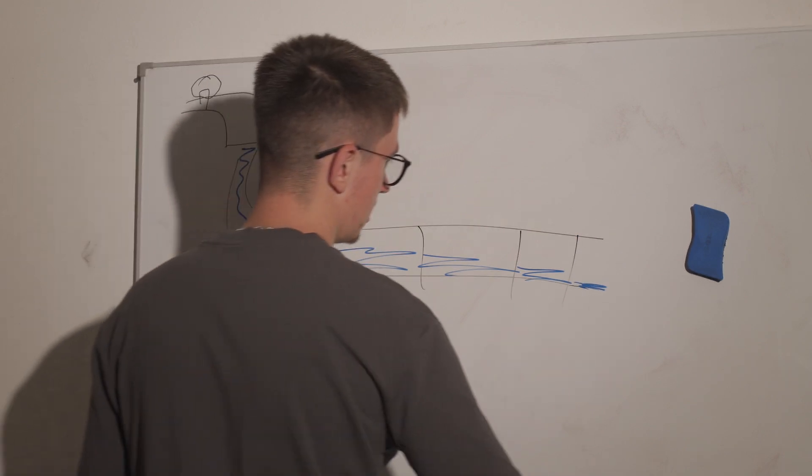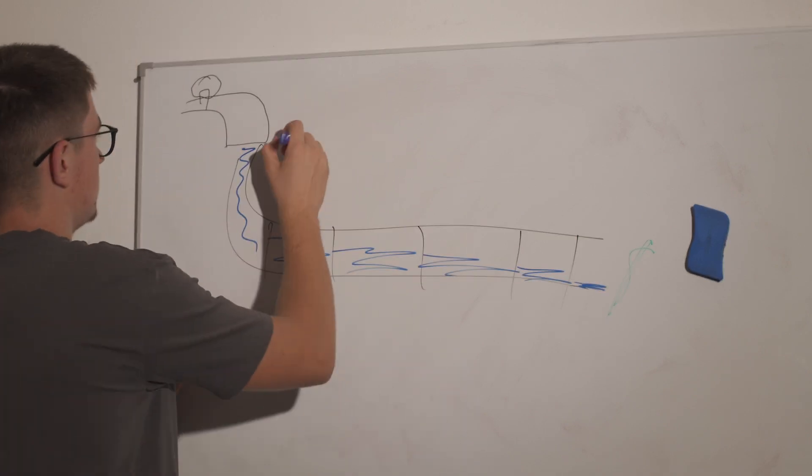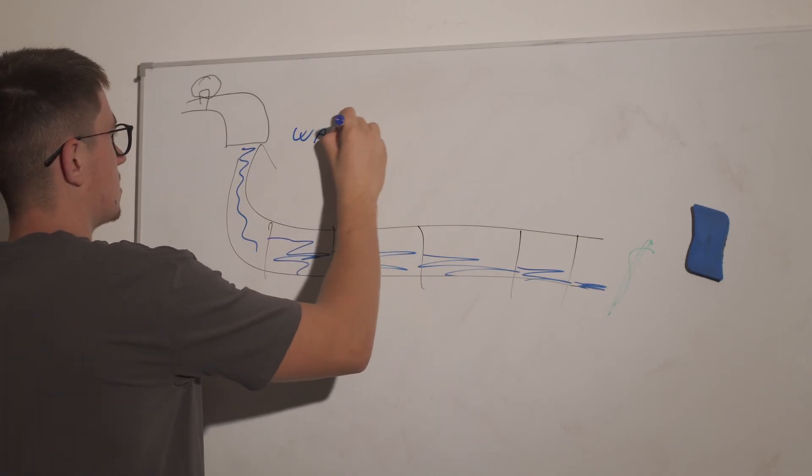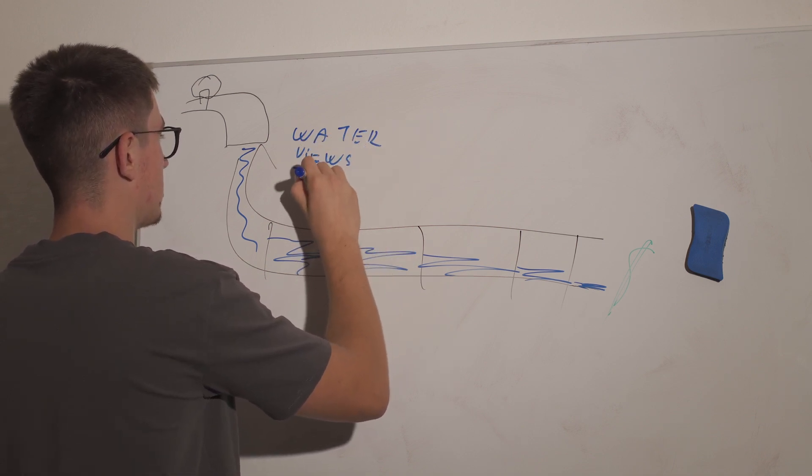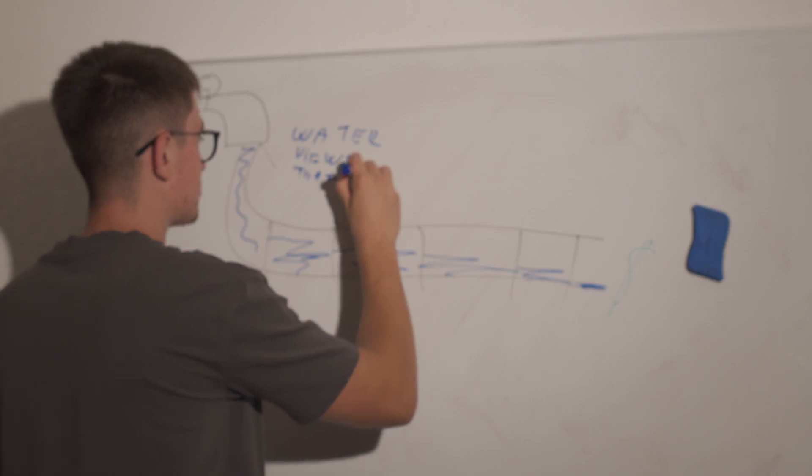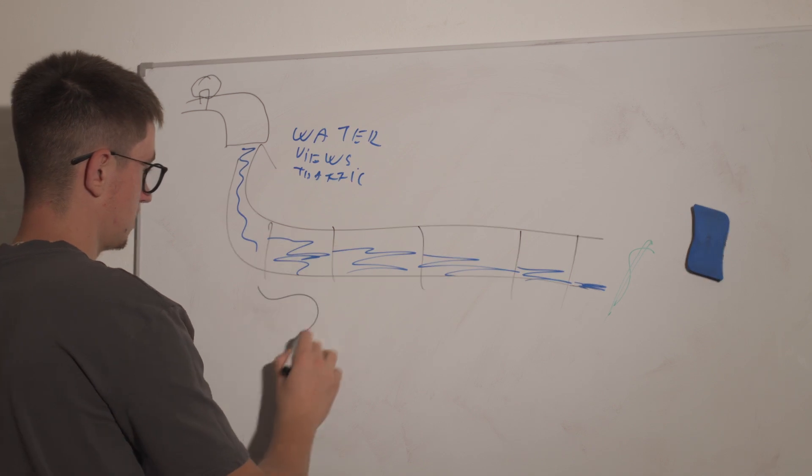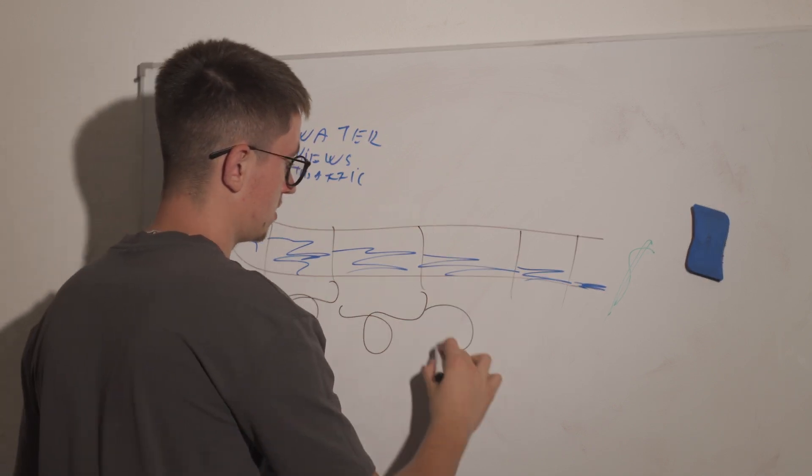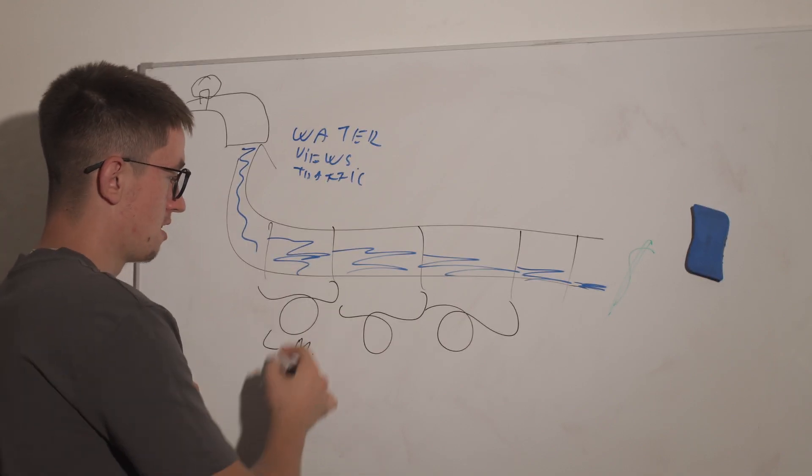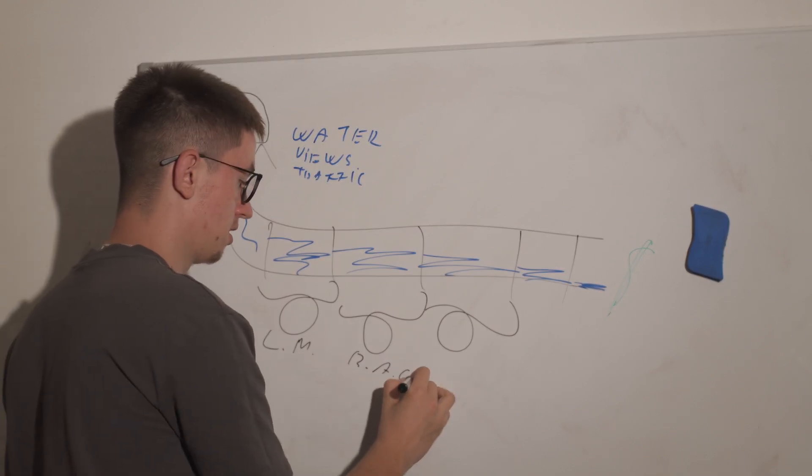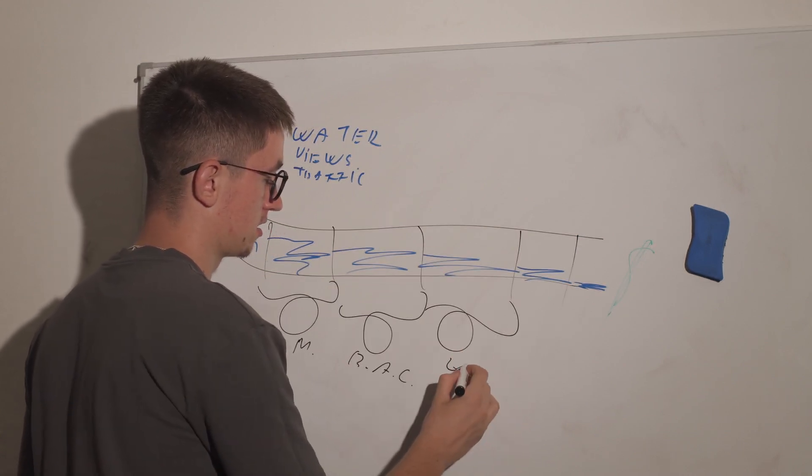This is how a throughput system looks like and this is all about the funnel. The blue represents water which represents your views, which represents your traffic. So the blue is just traffic. Each and every part of this is a step from your funnel. That's all. This could be the first one, the lead magnet.